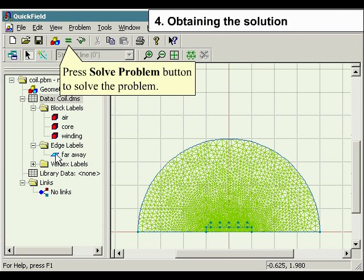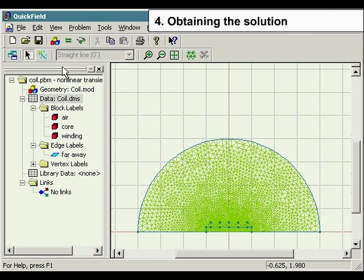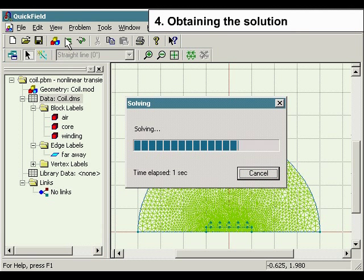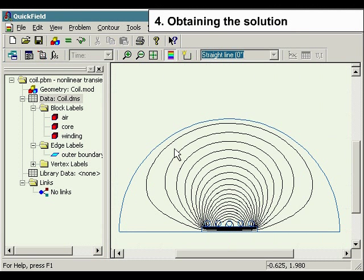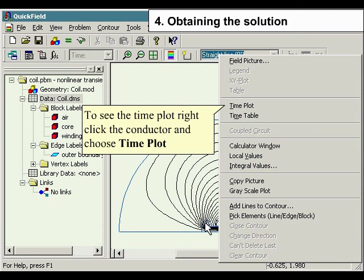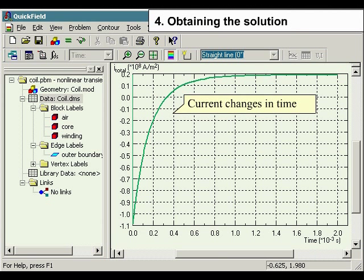Obtaining the solution. Press the solve problem button to solve the problem. To see the time plot, right-click the conductor and choose Time Plot. This function represents current changes with respect to time.